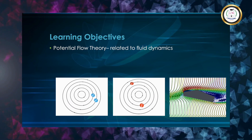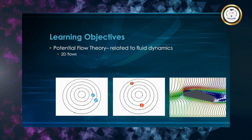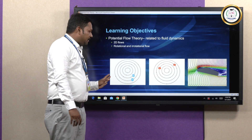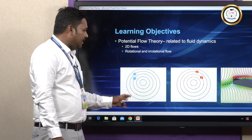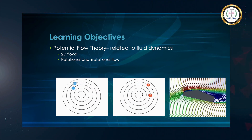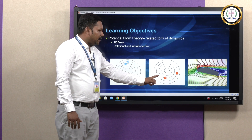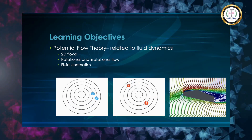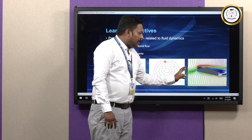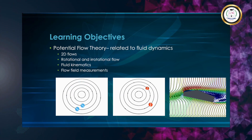Next, we go to the main learning objectives — what are the things we are going to learn in potential flow theory. First is 2D flows. Then rotational and irrotational flows. From the images, you can see the fluid rotating in clockwise direction as rotational flow, and the fluid in irrotational flow where fluid particles are stationary and spinning out. Third is fluid kinematics — what happens to the flow field parameters over the object varying with flow conditions — and then flow field measurements.